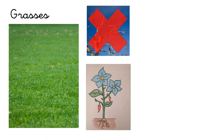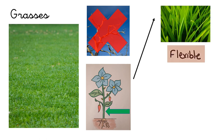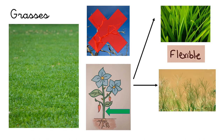First, we are going to talk about grasses. Grasses haven't got branches, but grasses have got a stem, and the stem is flexible — you can bend it — and thin; it's super small.